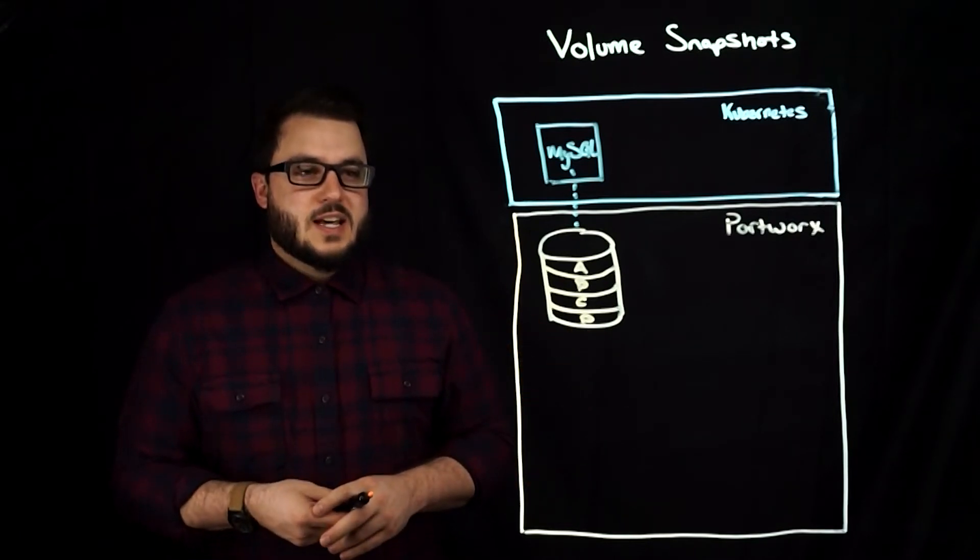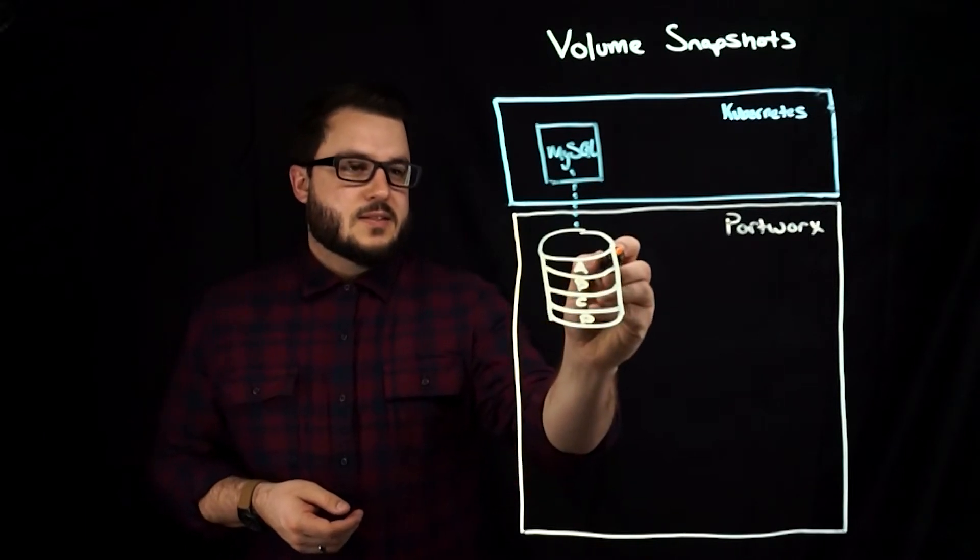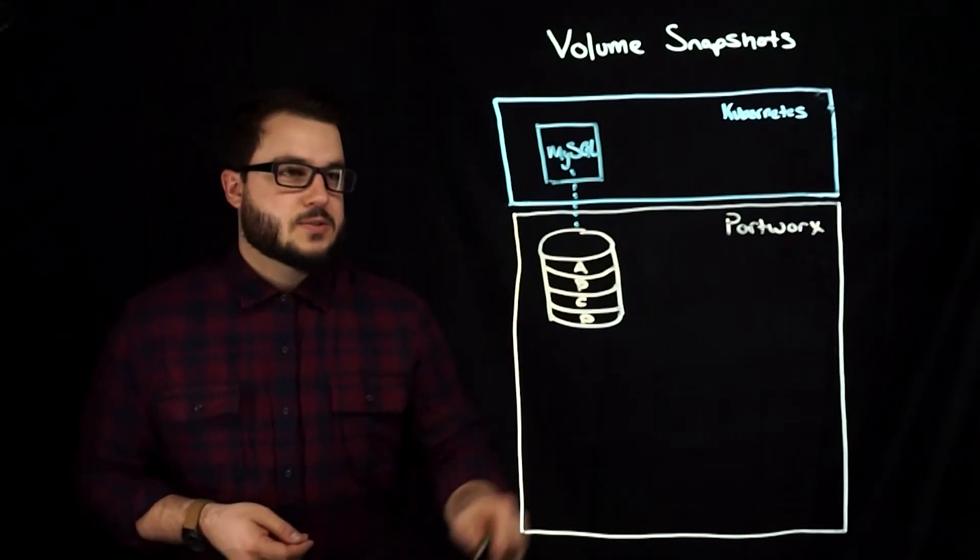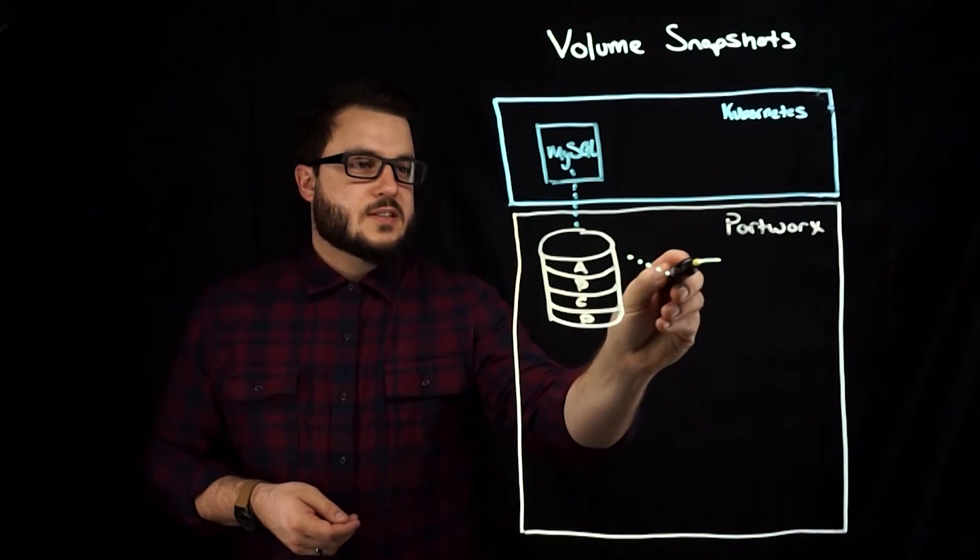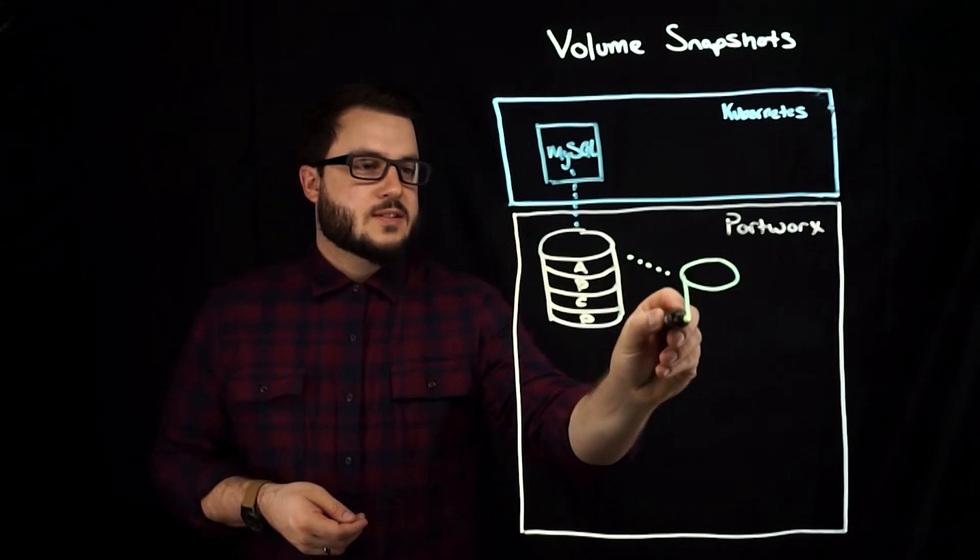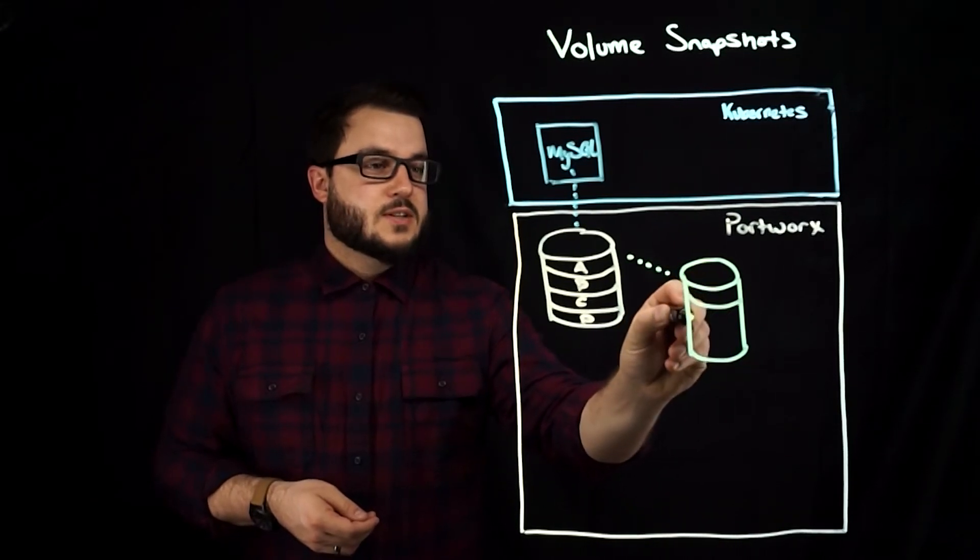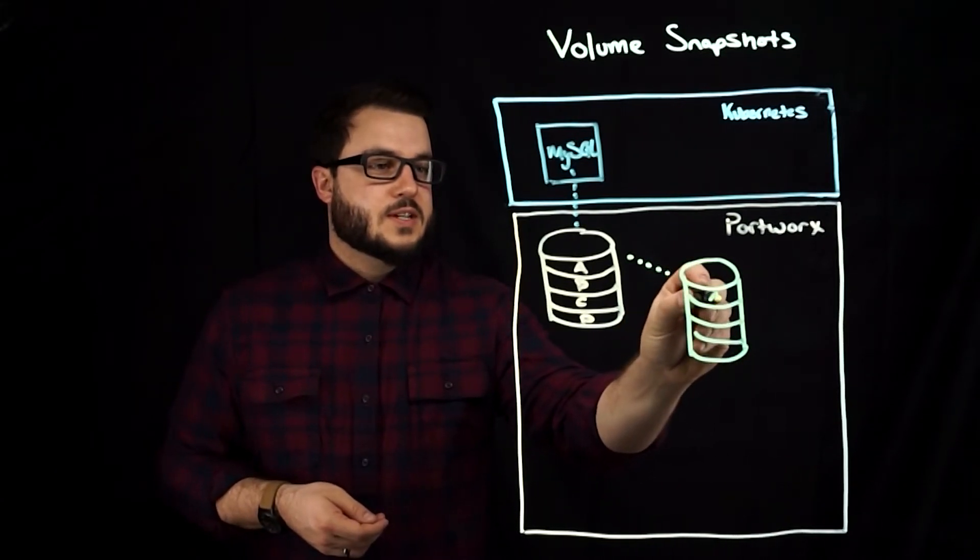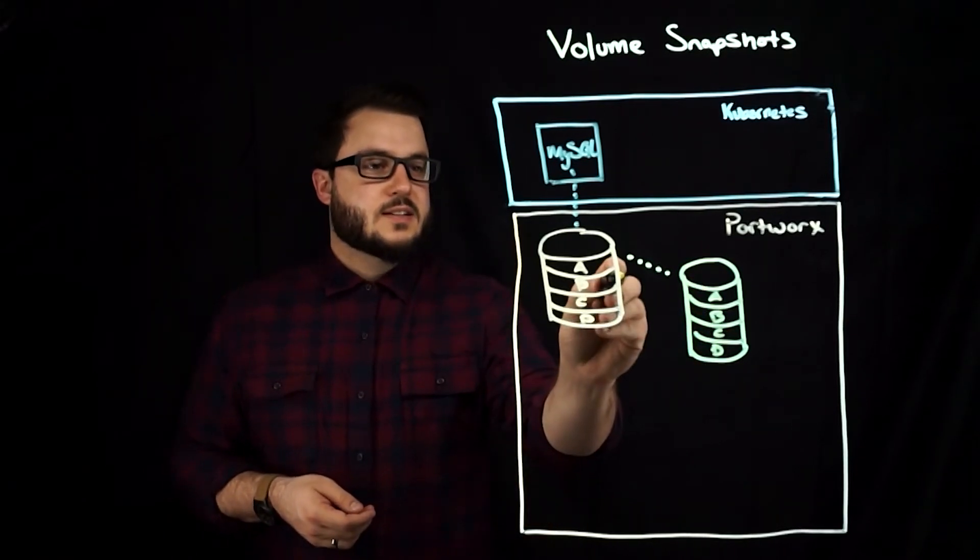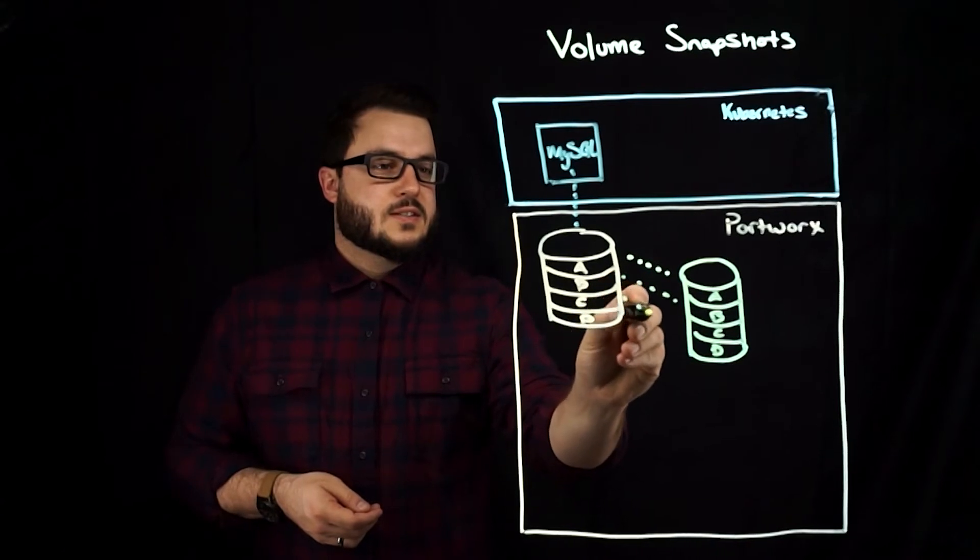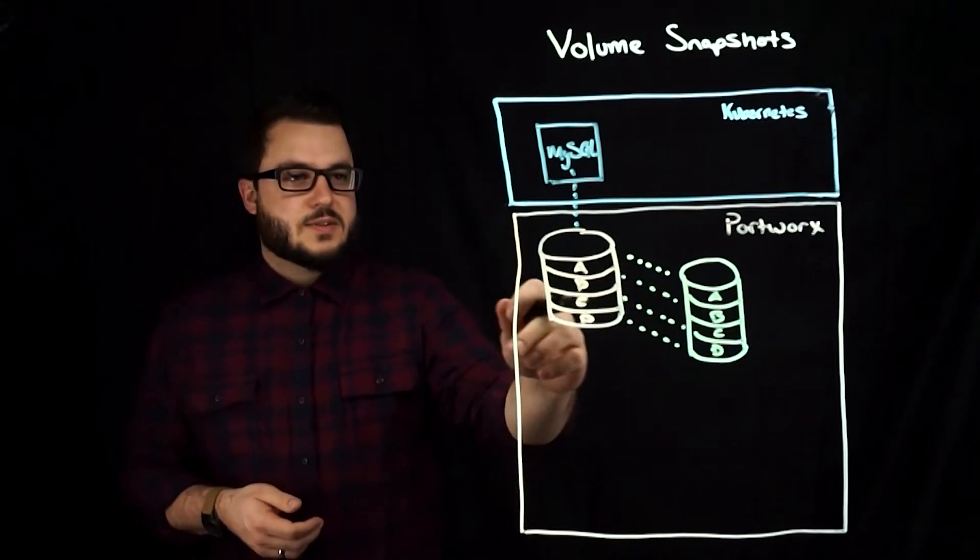And when a snapshot is taken, that snapshot is going to reference the original volume. So in here it's going to have A, B, C, D, because again this is a snapshot, essentially a copy of the original volume.